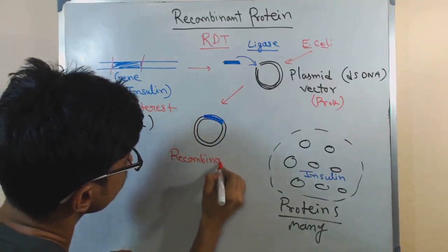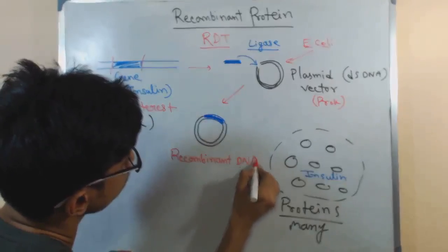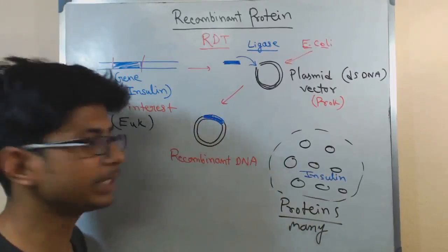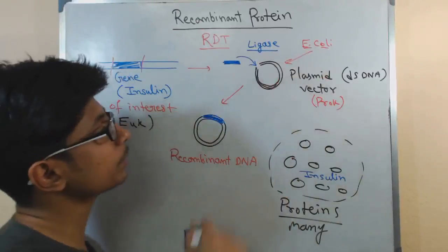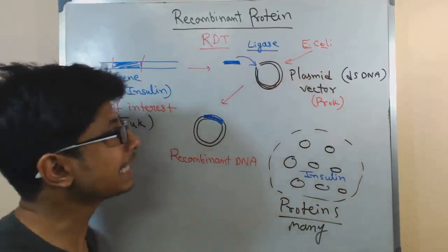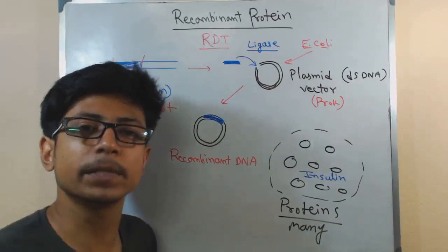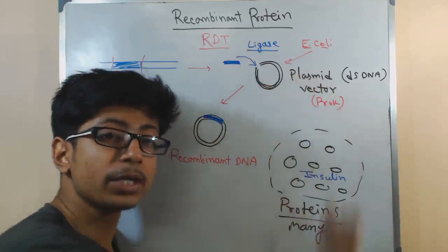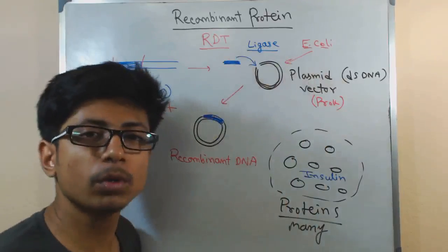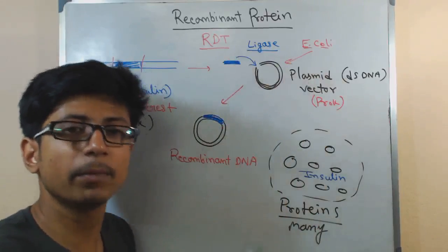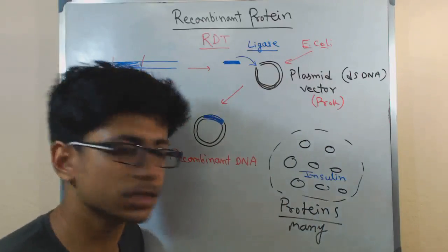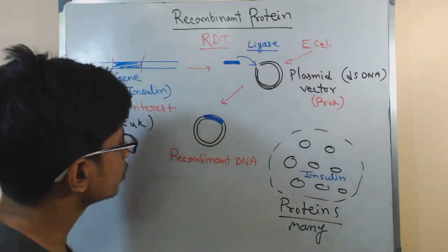Once we have this recombinant DNA molecule, the important factor about this vector like the plasmid is that they can undergo self-replication. This is a self-replicatory molecule, so they can do their own replication. They can multiply inside the cell multiple times, that is possible.